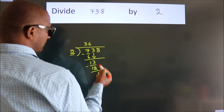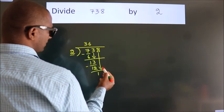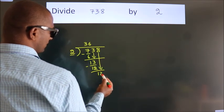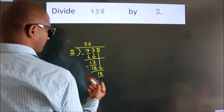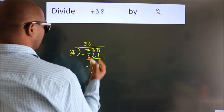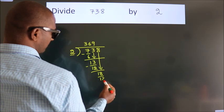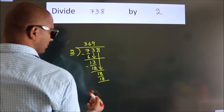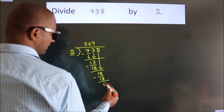After this, bring down the beside number. So 8 down, so 18. When do we get 18 in the 2 table? 2 times 9 is 18. Now we subtract and get 0.